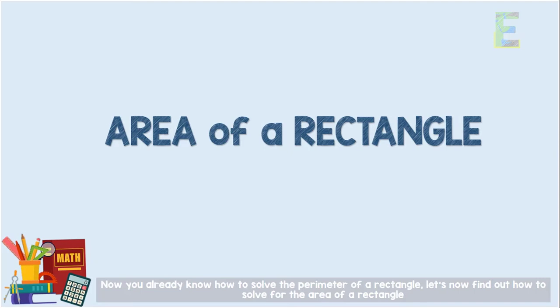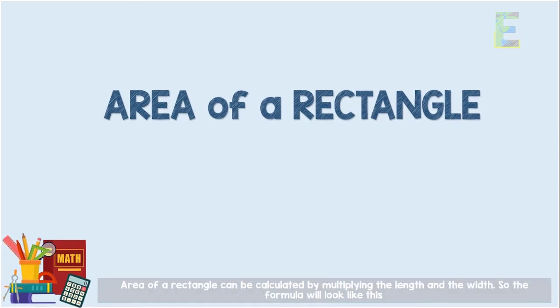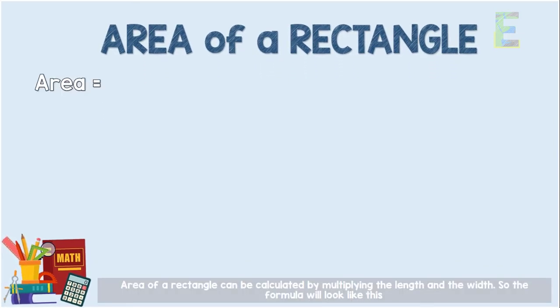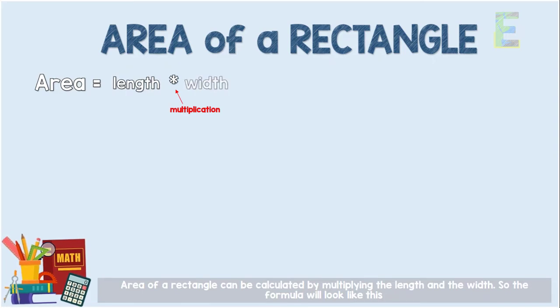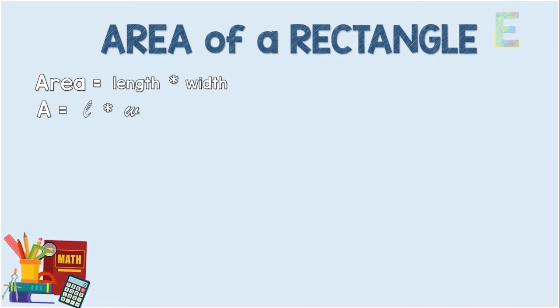Now that you already know how to solve the perimeter of a rectangle, let's find out how to solve for the area of a rectangle. The area of a rectangle can be calculated by multiplying the length and the width. So the formula will look like this: A equals L times W.